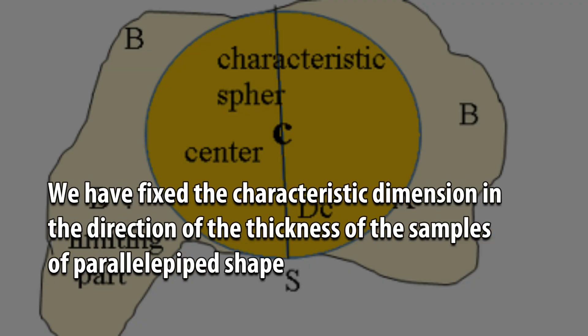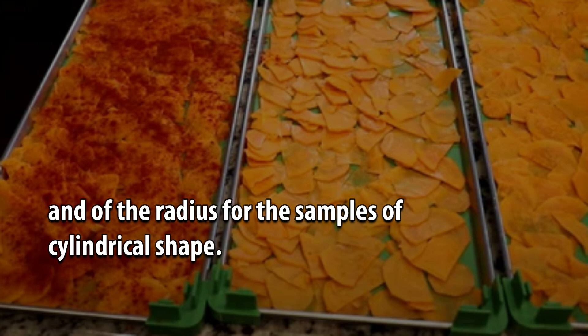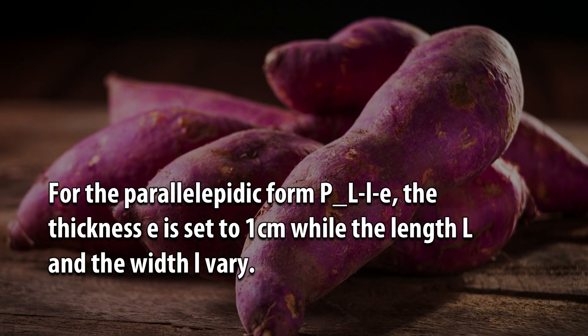We have fixed the characteristic dimension in the direction of the thickness of the samples of parallelopiped shape, and of the radius for the samples of cylindrical shape. For the parallelopipedic form, the thickness E is set to 1 cm while the length L and the width L vary.